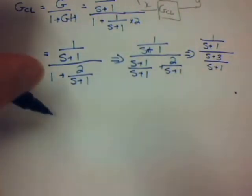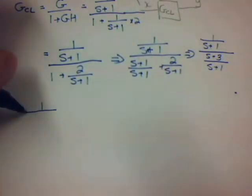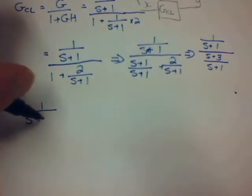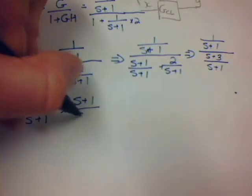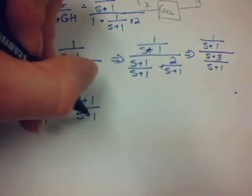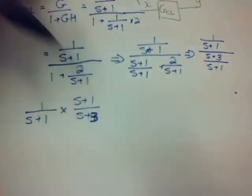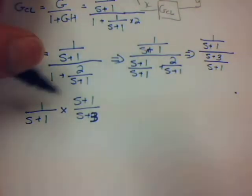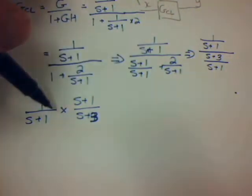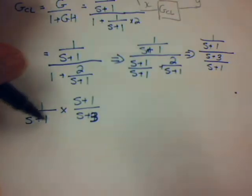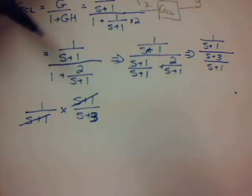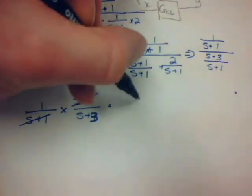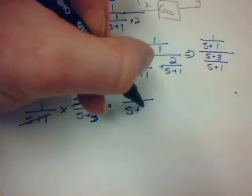I can rewrite and say 1 over S plus 1 times S plus 1 over S plus 3. We're dividing by inverting and multiplying. S plus 1 cancels out with the S plus 1 at the top. So the answer is 1 over S plus 3.